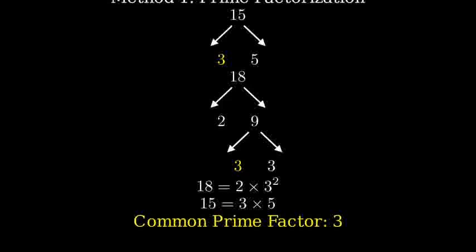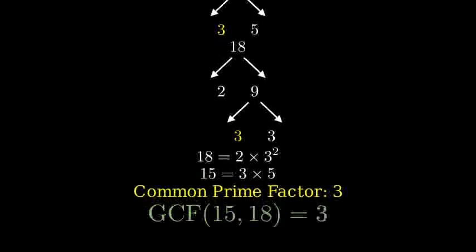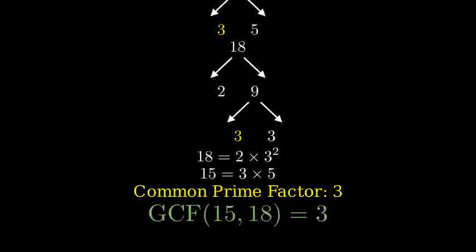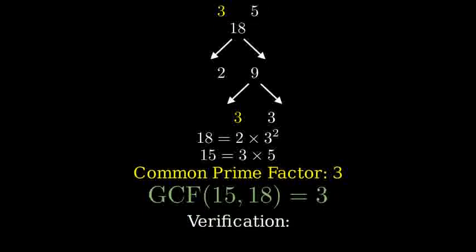To find the GCF, we multiply all the common prime factors. Since 3 is the only common prime factor, the greatest common factor of 15 and 18 is 3. Let's verify this is correct.